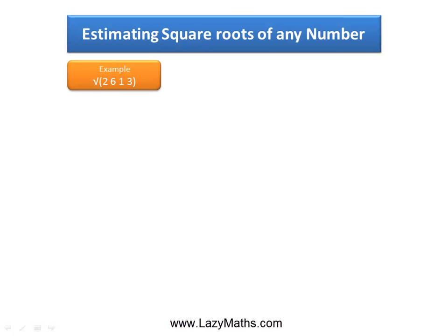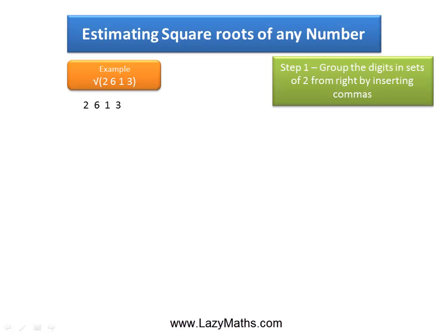Here's an example of estimating square roots of any number — the square root of 2613. The first step is to start grouping these digits in pairs of two starting from the right side by inserting a comma. So we insert a comma right here between 26 and 13.